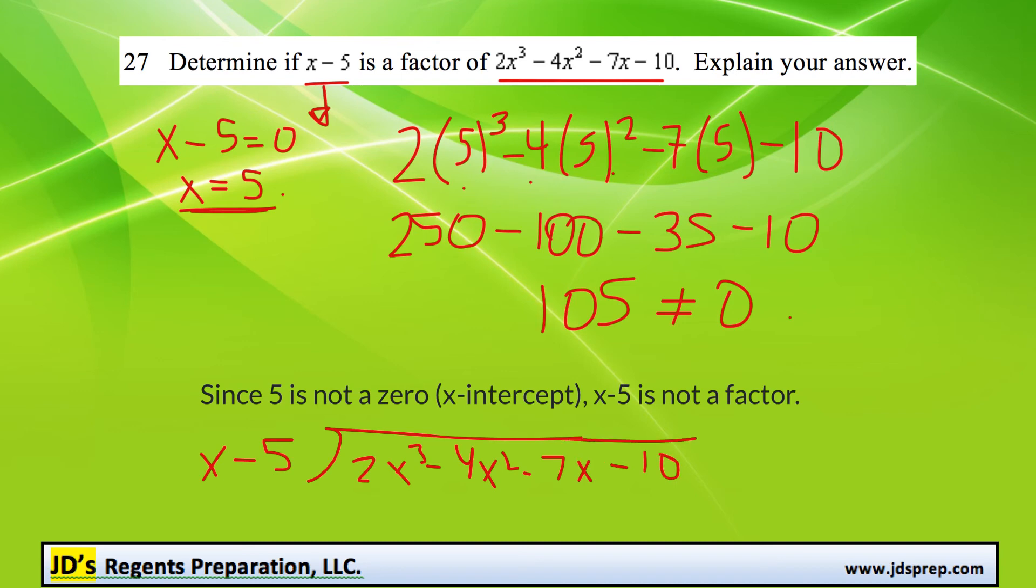And after going through that whole division process, you would find out that there is a remainder, which would also prove that x minus 5 is not a factor, because you would have to have a remainder of 0 in order for it to be a factor.